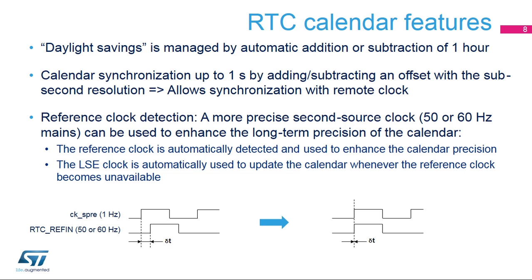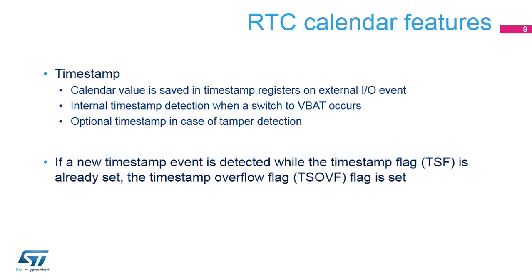Thanks to this mechanism, the calendar becomes as precise as the reference clock. When the reference clock is not available, the LSE clock is automatically used to update the calendar. A timestamp function is available. The sub-second, time, and date values are saved in timestamp registers when an event occurs on the timestamp I/O. A timestamp event can also occur when a switch to VBAT occurs. A timestamp can also be generated when a tamper event is detected.